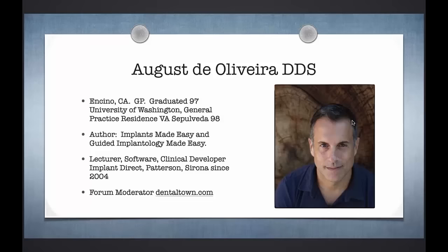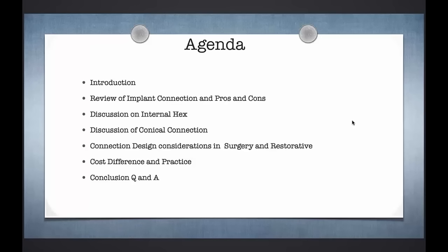Let's talk about what this evening is going to be about. We're going to discuss mainly three implant connections: the tri-lobe implant connection, the internal hex implant connection, and the conical connection. We'll talk about how these connections affect the surgical placement of the implant as well as, most importantly, the restorative aspect — that's where you'll see most of the differences. We'll also cover cost differences between different implants and conclude with Q&A.